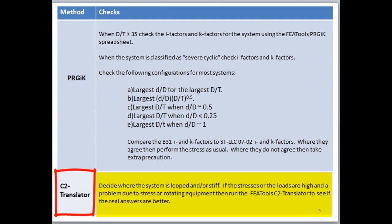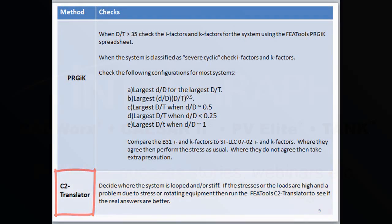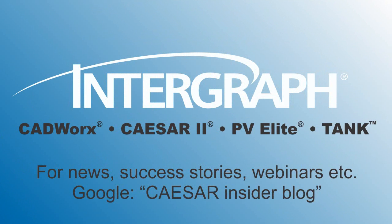What makes the CAESAR II model translator practical is how fast it works. You try it, and if it helps, great — and if it doesn't, then you know that you likely really do need to make some change to the piping system. Hopefully, FEA Tools helps the user avoid making changes to the piping system that just aren't needed.